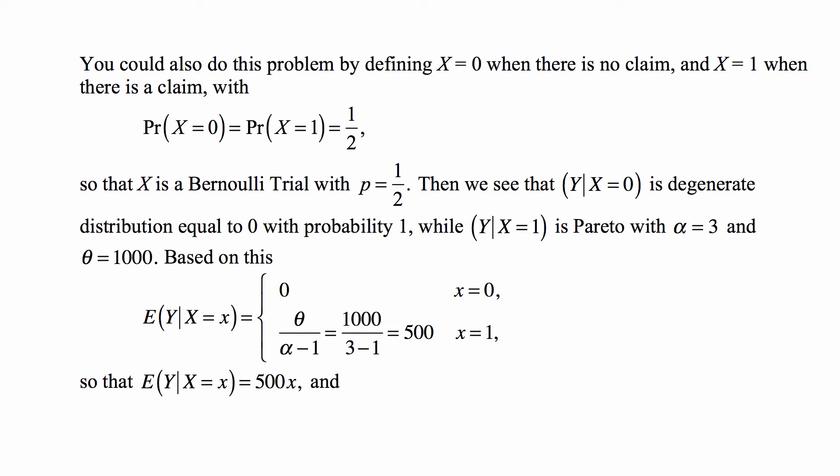Then we see that Y, given that X = 0, is a degenerate distribution equal to 0 with probability 1, while Y, given that X = 1, is Pareto with α = 3 and θ = 1000.